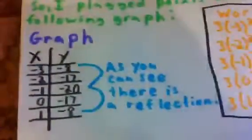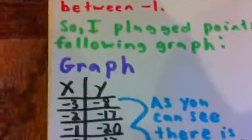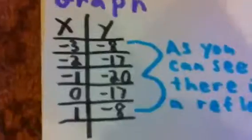Therefore, the axis of symmetry is negative 1. You should then plot points between negative 1s. So I did that, and here's the graph.